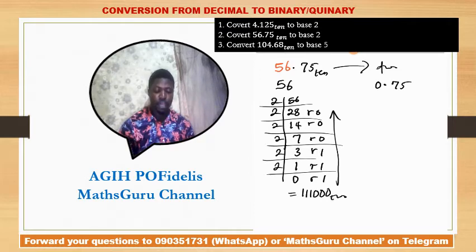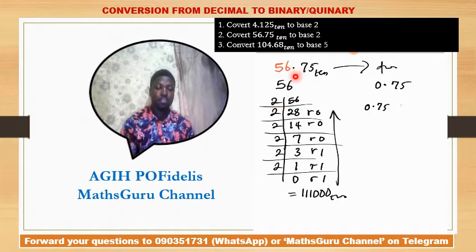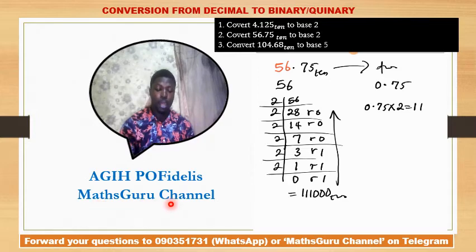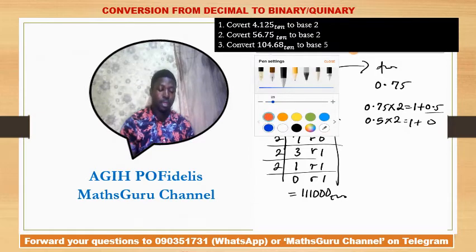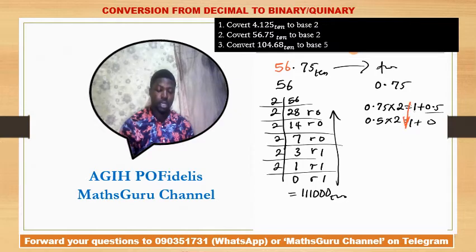For the decimal part 0.75, we multiply by 2: 0.75 times 2 gives 1.5, written as 1 plus 0.5. Then 0.5 times 2 gives 1.0, written as 1 plus 0. Reading downward gives 0.11 in base 2.